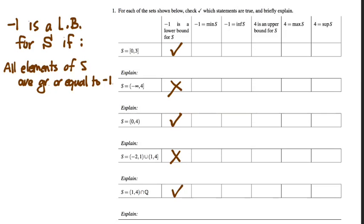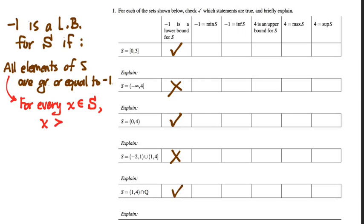Let's reframe it using quantifiers. How would I use a quantifier to rewrite what's being said? All elements of S — how would I write that as a quantified logical proposition? For every. For every what? For every X that exists in... right. So we have to give that element a name, we'll call it X. For every X in this set, then how would we complete that sentence? X is greater than or equal to negative 1.